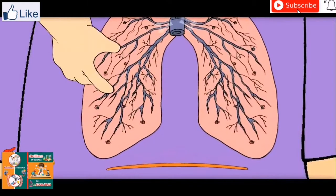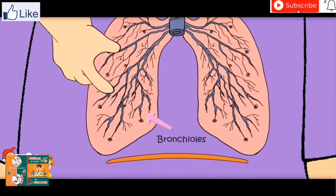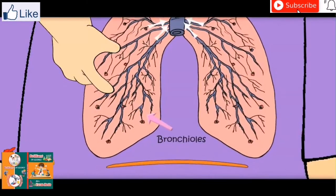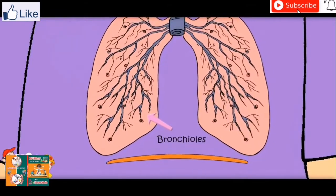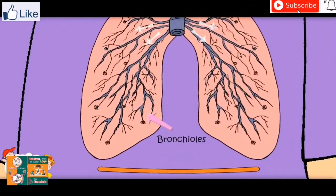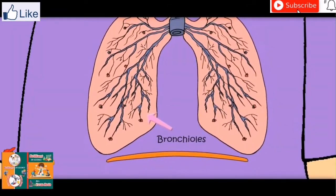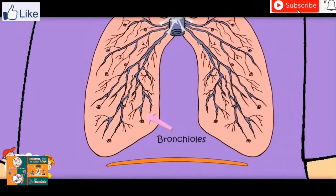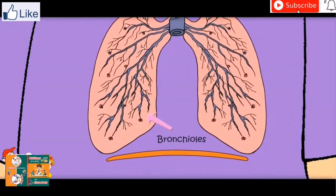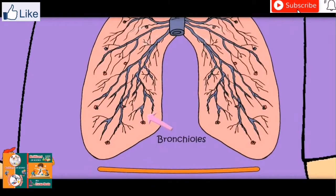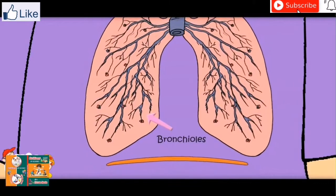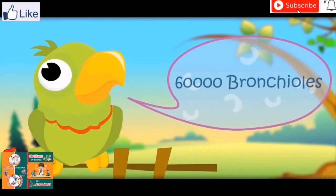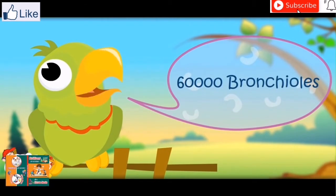What are these tree branches? There are 60,000 tubes in the lungs. These are called bronchioles — small tubes which take air inside and out of the body. There are 30,000 in each lung. 60,000 bronchioles in total.